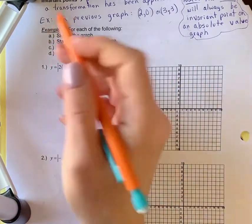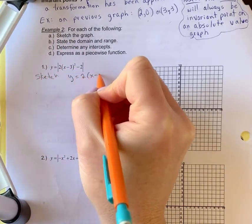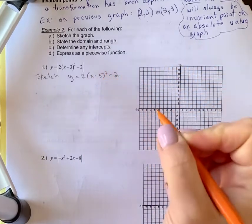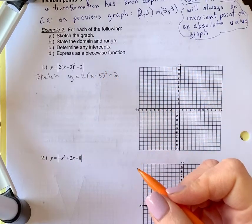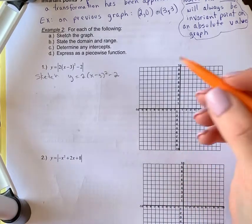So first we're going to sketch, without the brackets, just y equals 2(x-3)²-2. That's not my final answer, so I'm going to have to do some erasing. So make sure you draw this in pencil, and then you can switch to pen later on for your final answer.